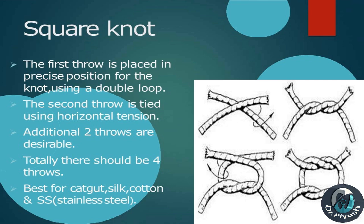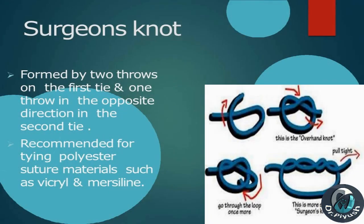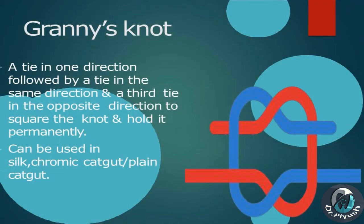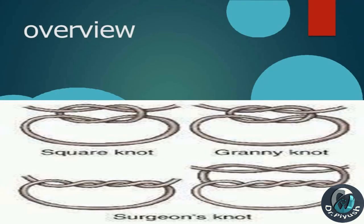Surgeon's knot: formed by two throws on the first tie and one throw in the opposite direction on the second tie. Recommended for tying polyester suture materials such as Vicryl and Mersilene. Granny's knot: a tie in one direction followed by a tie in the same direction, and a third tie in the opposite direction to square the knot and hold it permanently. Can be used with silk, chromic catgut, or plain catgut.